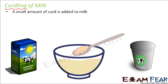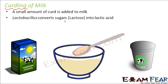That small amount of curd contains the bacteria Lactobacillus. Even though the amount of curd added is very small, it contains millions of Lactobacillus. What these Lactobacillus do is convert sugars into lactic acid. Milk contains a sugar called lactose — the word 'lacto' is related to milk, therefore the sugar present in milk is lactose. So Lactobacillus will convert lactose into lactic acid, essentially converting sugar into acid.